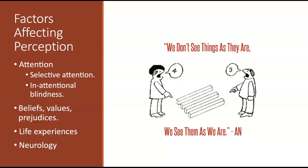The example for inattentional blindness was the gorilla video, where you watched a basketball being passed back and forth. Some of you saw the gorilla and some of you didn't, because you were attending so much to the basketball that you couldn't see the gorilla — you didn't perceive it. Whether or not you perceive something depends on what you're attending to and what you're blind to.